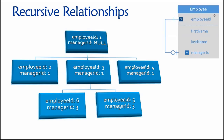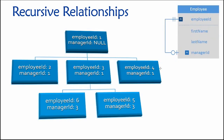With this very simple design — just one table — you can record information about a hierarchy of any arbitrary complexity. We could make this person have four direct reports working for them, and then maybe this person has two people working for them, and so on. You don't have to make any changes to this database design. This design works beautifully.